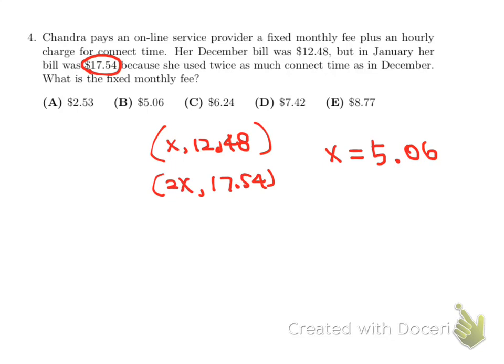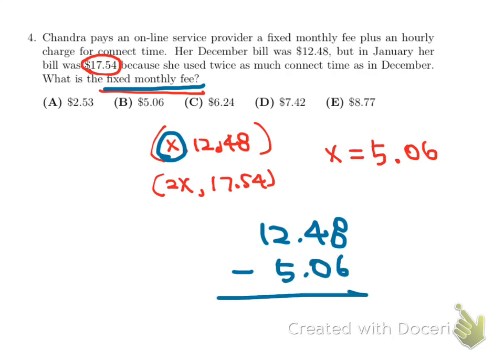Now, what we are looking for is a fixed monthly fee. Since when she spent x amount of time that cost her 5.06 more, then before they used x amount of connect time, it probably started with some value. That would be the fixed cost here, which is 12.48 minus 5.06. Then that becomes 7.42. And that becomes our answer, which is choice D.